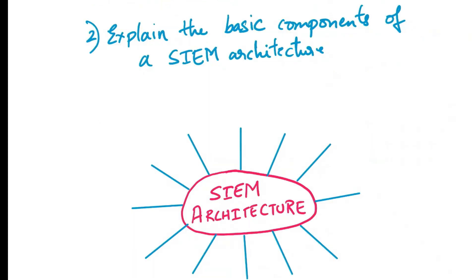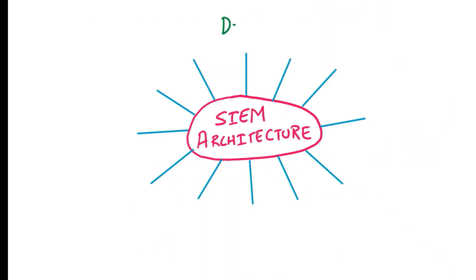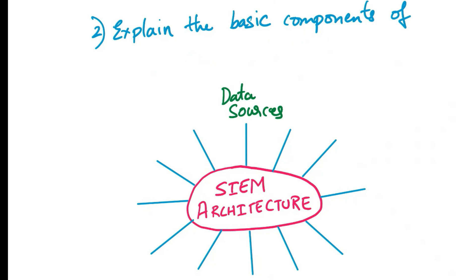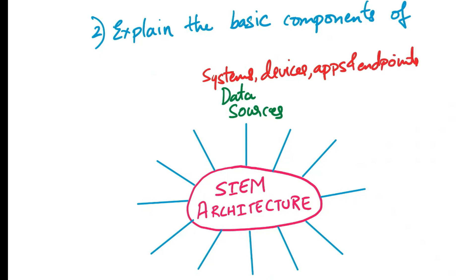Now let's move on to the next question. A typical SIEM architecture consists of several essential components that work together to collect, store, analyze, and manage security-related data from various sources within an organization's IT environment. The first component is data sources — these are systems, devices, applications, and endpoints that generate logs and security-related events. Sources include firewalls, intrusion detection and prevention systems, servers, network switches, antivirus software, and more. Data sources provide the raw event data that the SIEM collects and analyzes.